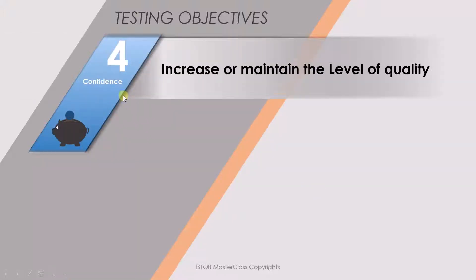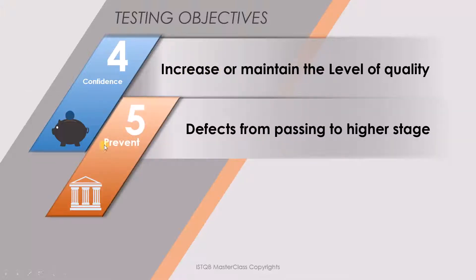Now let's look at three more points. The fourth point is to develop confidence — the objective is to increase or maintain the level of quality. If you already have a good quality product, you must maintain it; otherwise, you have to increase its quality. The fifth point is to prevent defects from passing to a higher stage. If you can find a defect in your stage, try to find all defects and not let any pass on to a higher stage.